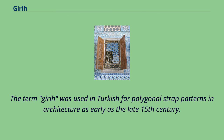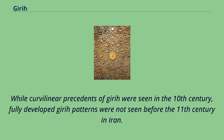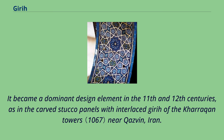The term girih was used in Turkish for polygonal strap patterns in architecture as early as the late 15th century. While curvilinear precedents of girih were seen in the 10th century, fully developed girih patterns were not seen before the 11th century in Iran. It became a dominant design element in the 11th and 12th centuries, as in the carved stucco panels of the Kharraqan towers near Qazvin, Iran.